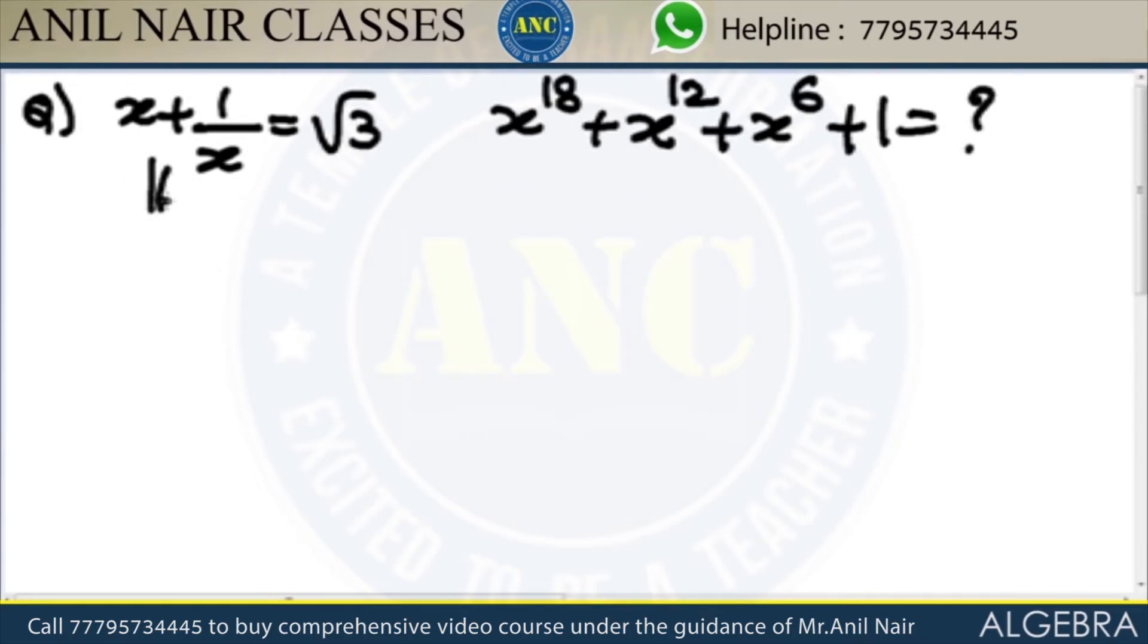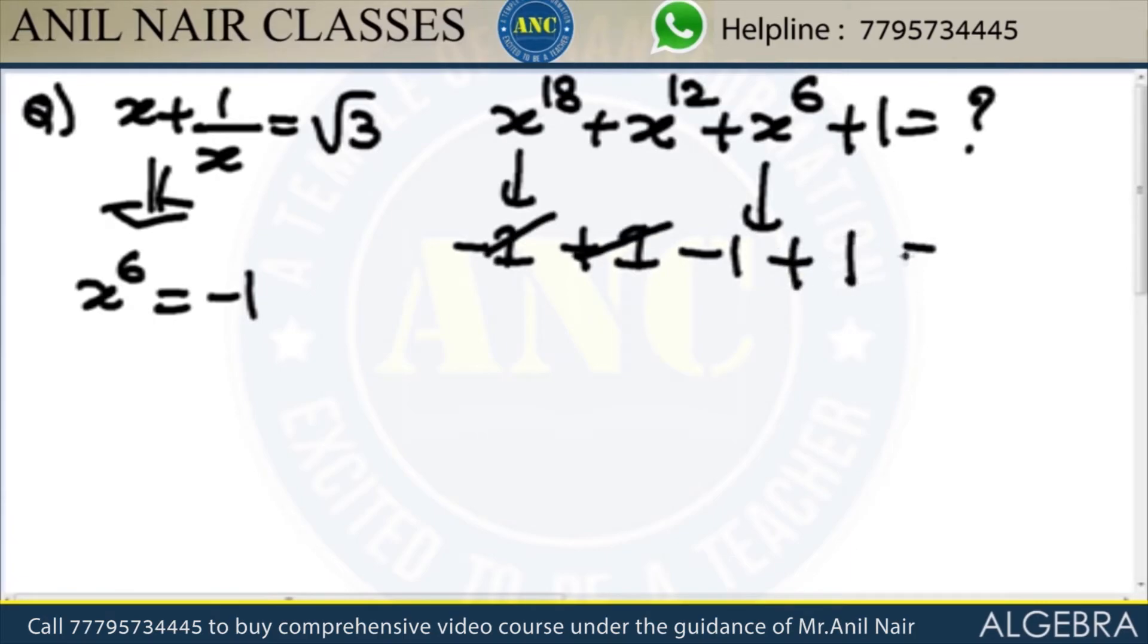Just now we discussed x power 6 is minus 1. So this is minus 1 whole cube, this is minus 1 whole square, this is minus 1 plus 1. Answer is 0.